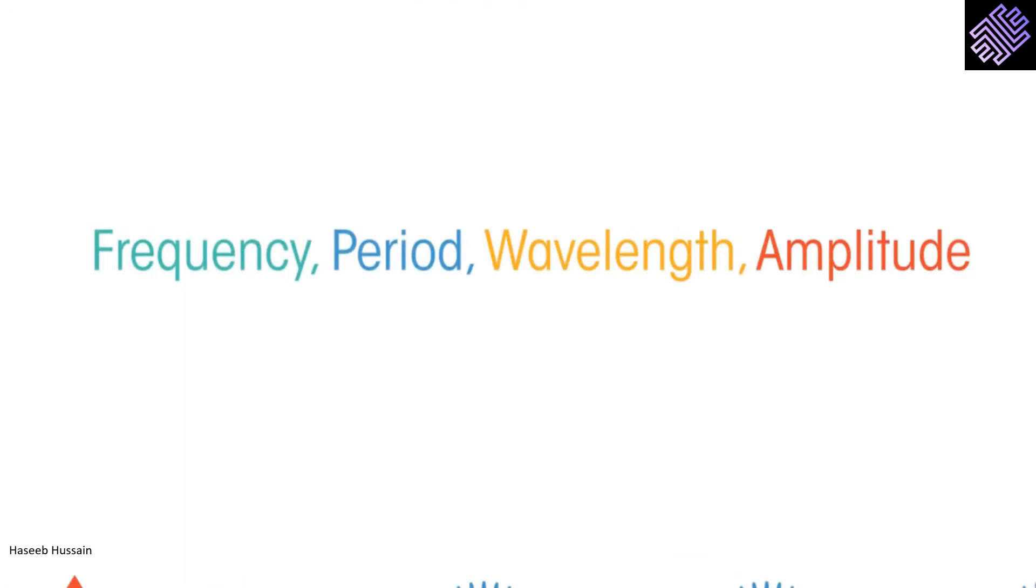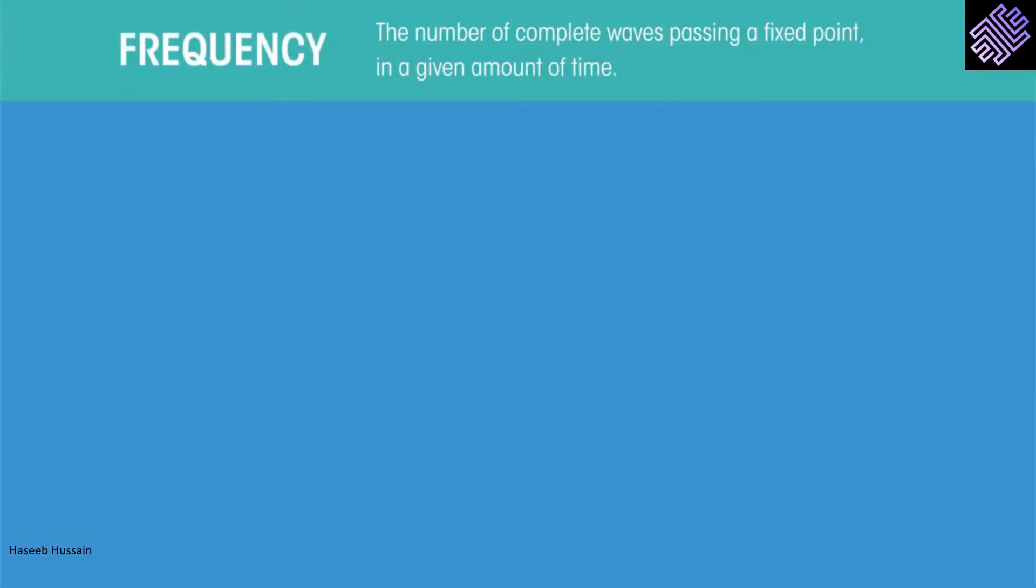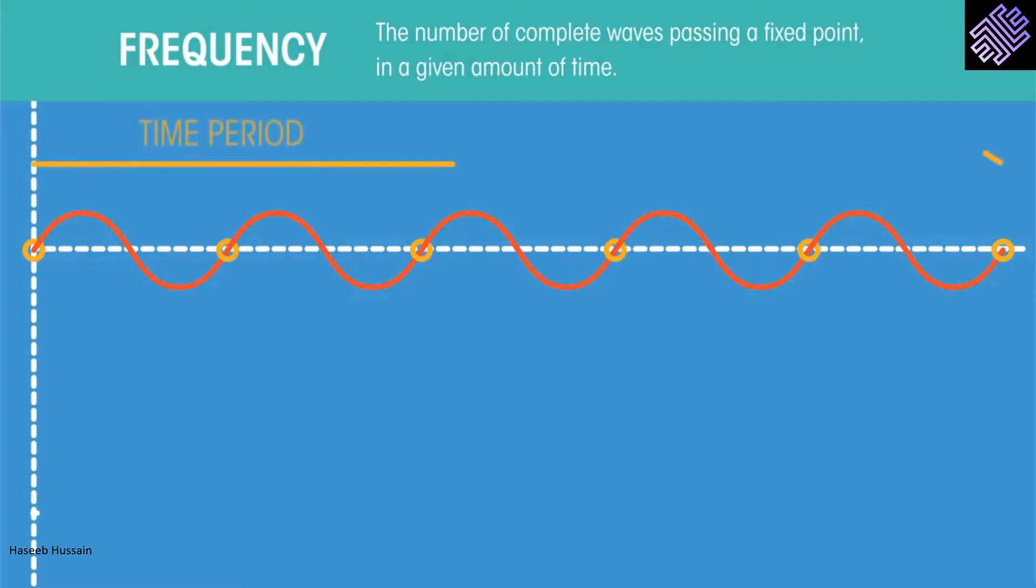We already discussed what is meant by wavelength and amplitude. Let's discover what is meant by frequency and time period. Frequency of a wave is the number of waves passing a fixed point in a given amount of time. This time period is usually one second.